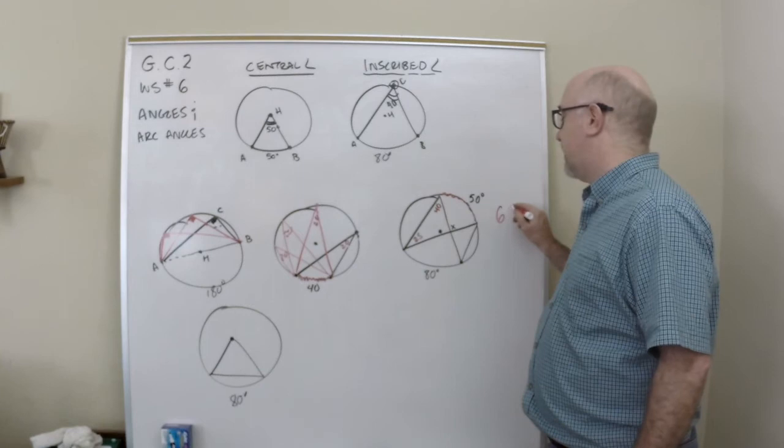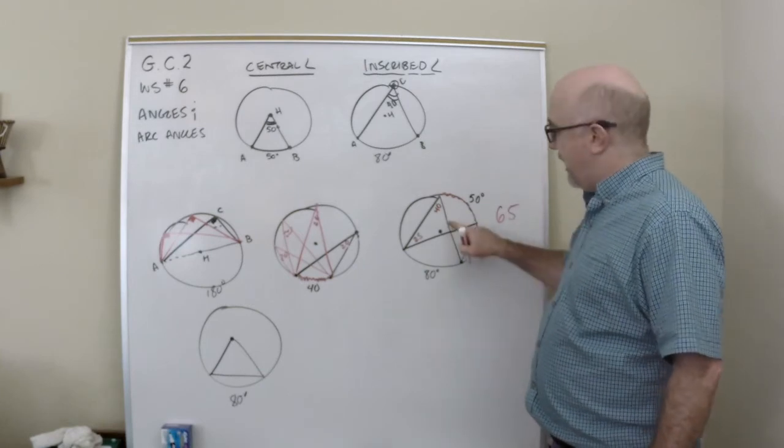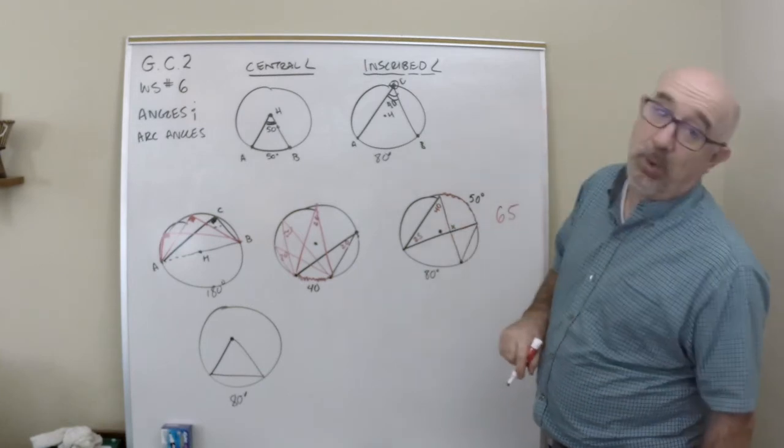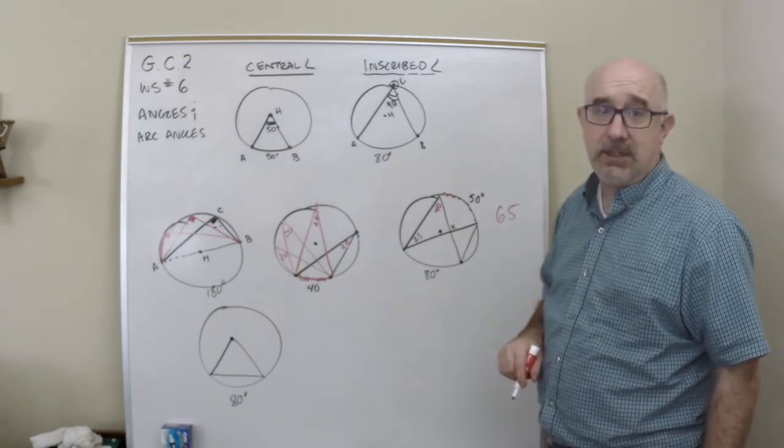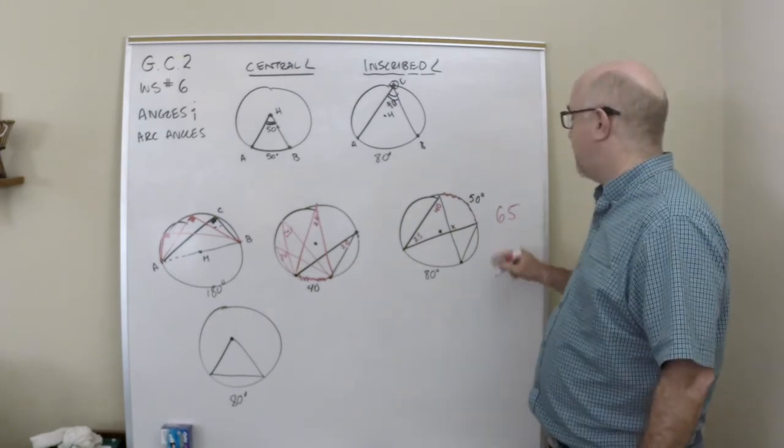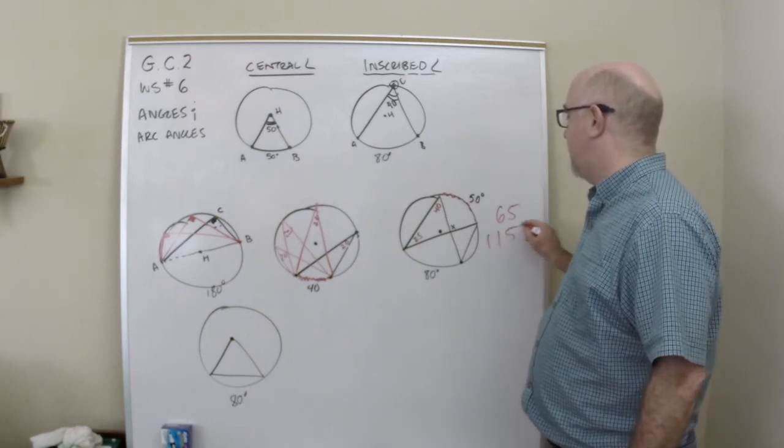Now that comes to 65. That angle in this corner—this is a poorly drawn triangle, don't get too critical here—it comes to 65, which leaves me with 115 degrees.